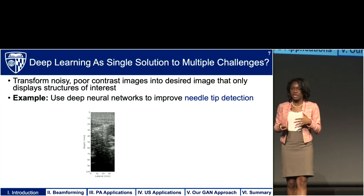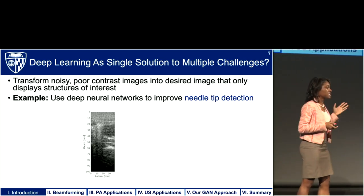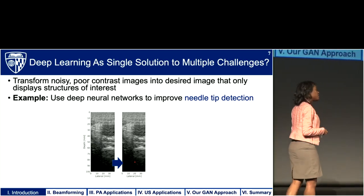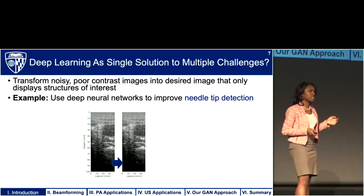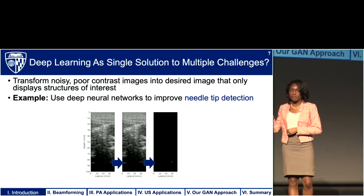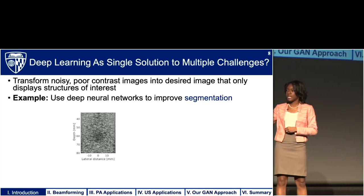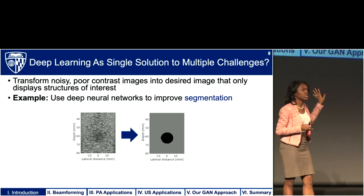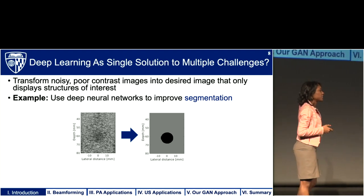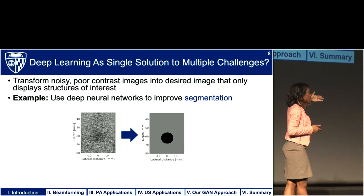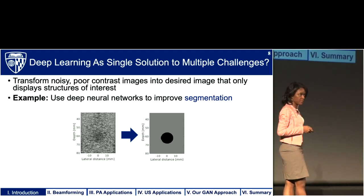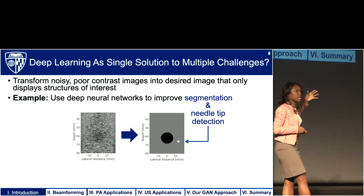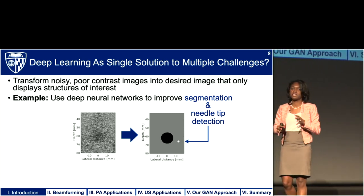and use it to display structures that might not show up very well, such as a needle tip? I want to provide a clearer indication of where the needle tip is located, which I can do by overlaying the needle tip on the image or displaying the needle tip by itself. Another example is using a deep neural network to transform a noisy, poor-contrast image into one that shows only the structure of interest, and this is the idea and concept for using deep learning to segment only the structures of interest.